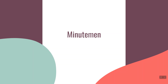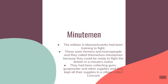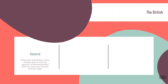Vocabulary word: Minute Men. The militias in Massachusetts had been training to fight — farmers and townspeople — and they called themselves Minute Men because they could be ready to fight the British in a minute's notice. They could be in their fields farming and, when they found out the British were on their way, be ready to fight immediately. The Minute Men had been collecting guns, gunpowder, and supplies, storing them all in a village called Concord.